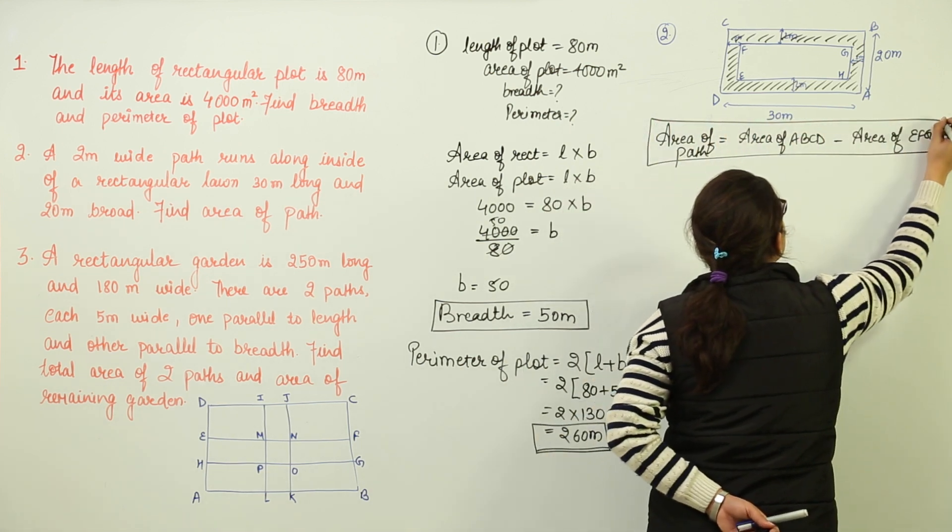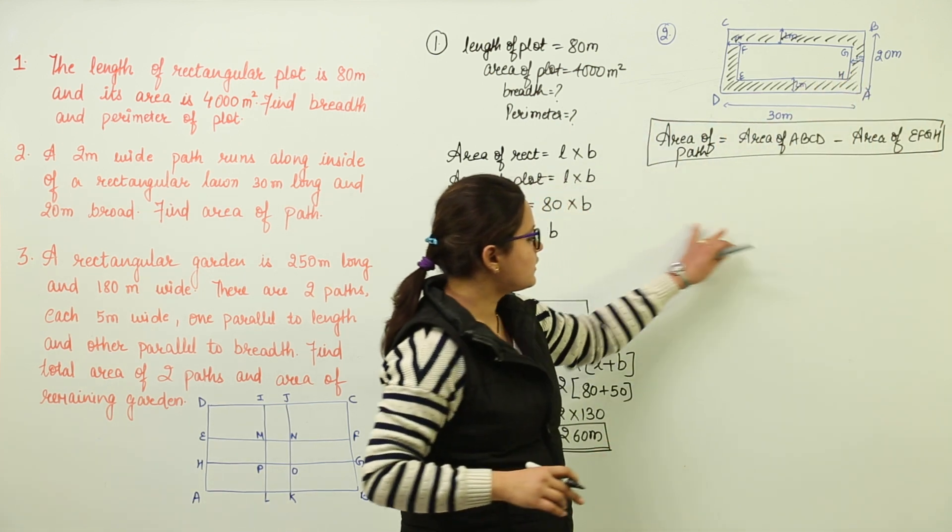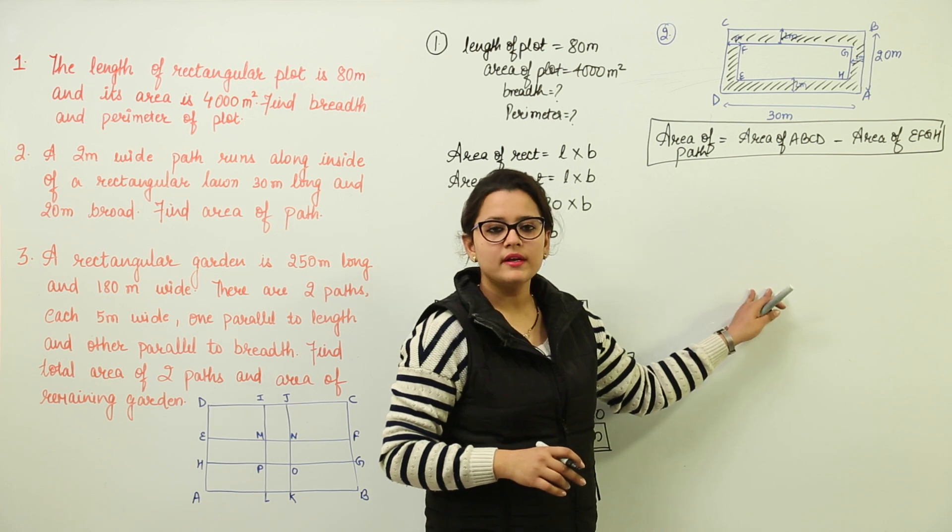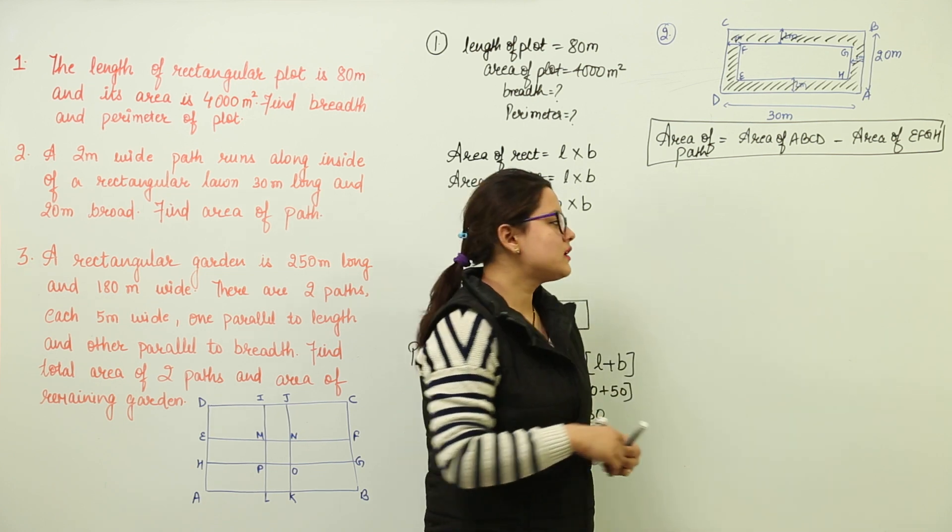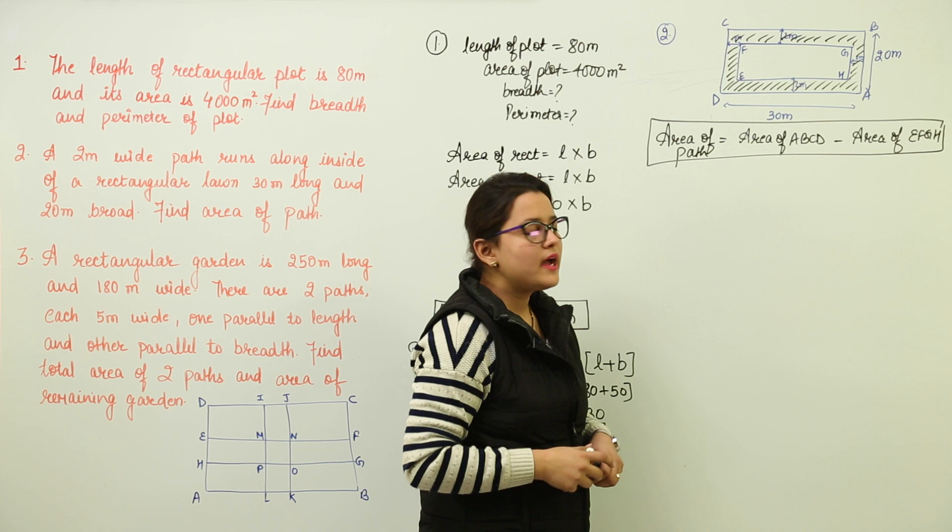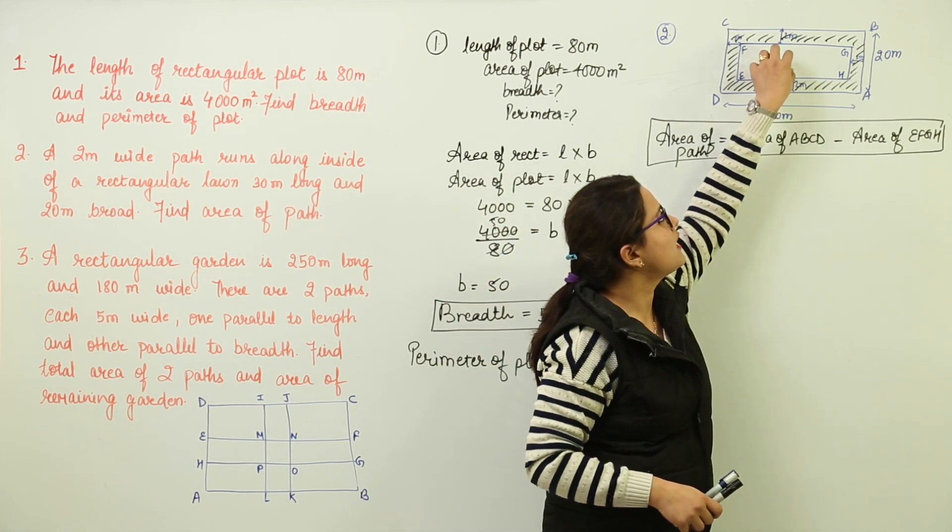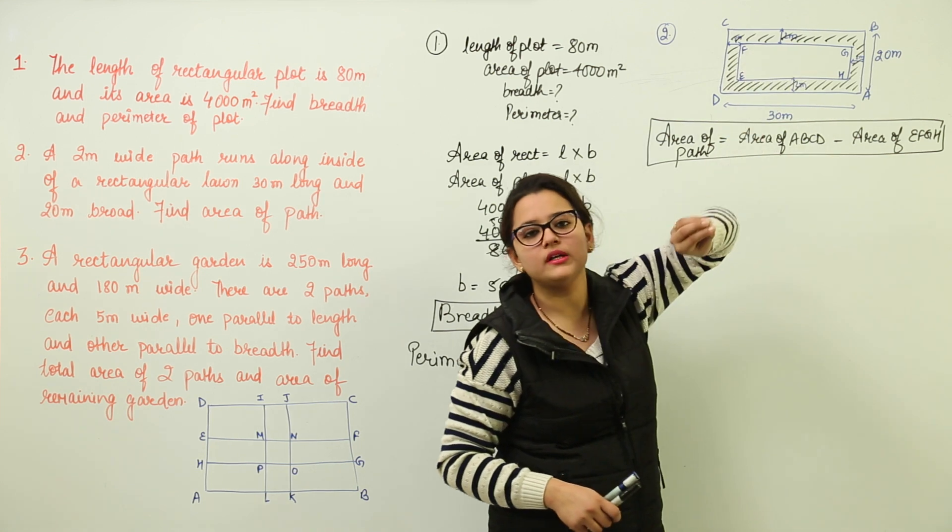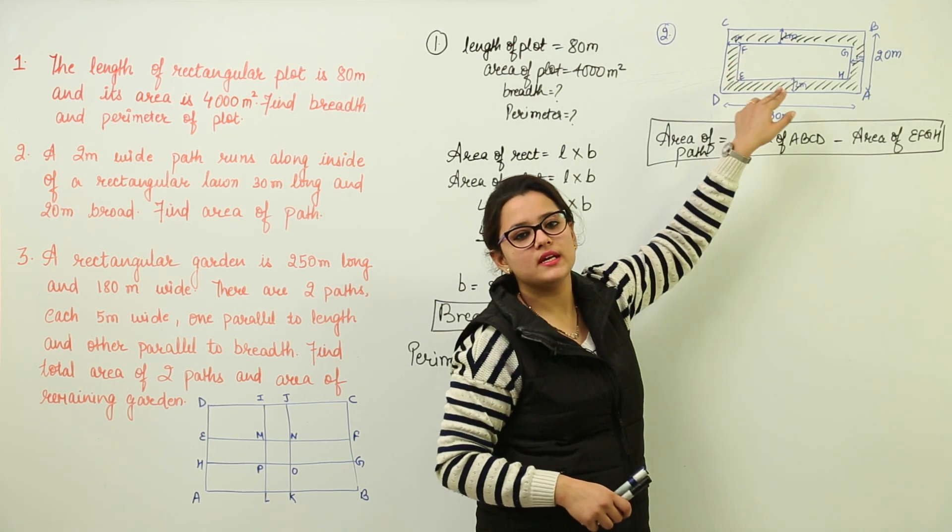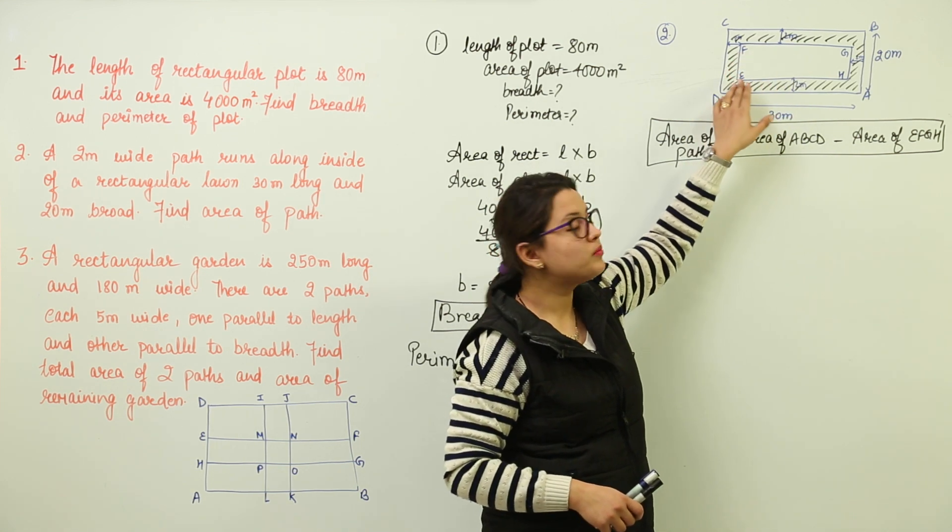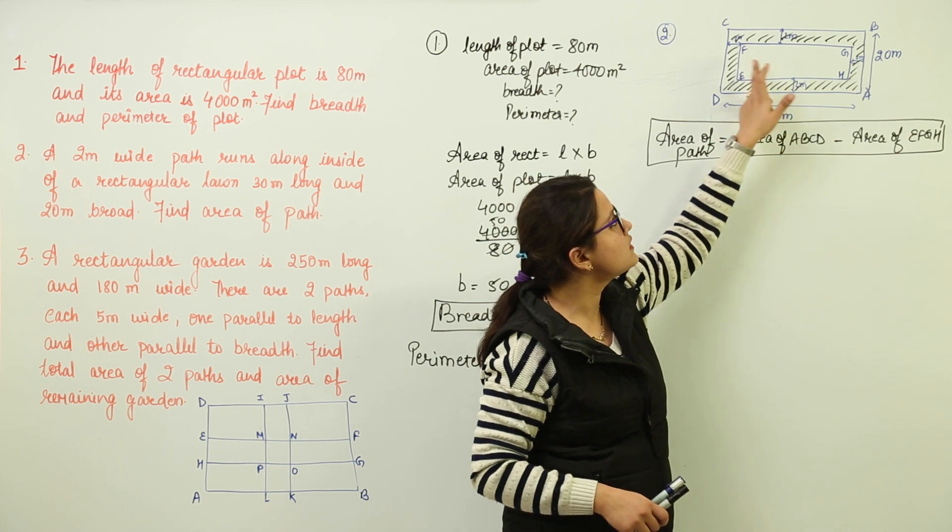See, you have the total lawn with you, this whole thing, right? And you want to take some piece out of it. I have the whole lawn. I have taken this EFGH portion, I picked it up and I pulled it out. How much is the area left now? The area left would be only the shaded portion that you can see.